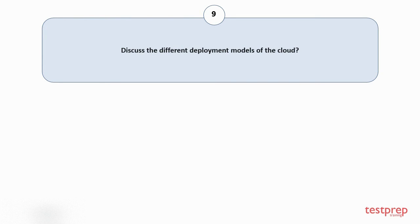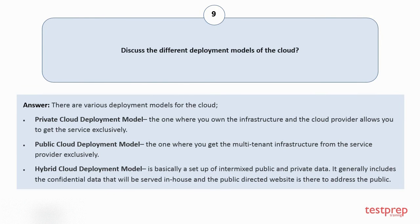Question number 9: Discuss the different deployment models of the cloud. There are various deployment models for the cloud. First, the private cloud deployment model is the one where you own the infrastructure and the cloud provider allows you to get the service exclusively. Second, the public cloud deployment model is where you get multi-tenant infrastructure from the service provider. Third, the hybrid cloud deployment model is a setup of intermixed public and private data, generally including confidential data served in-house while the public-directed website addresses the public.